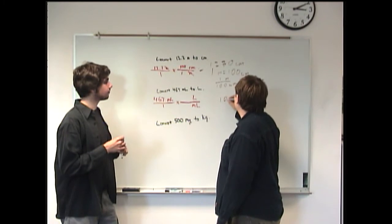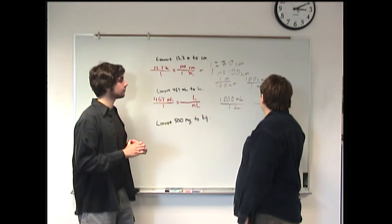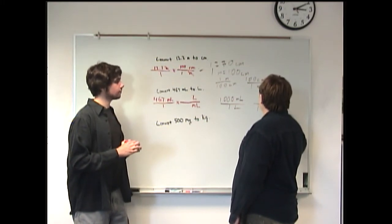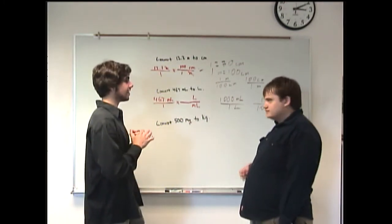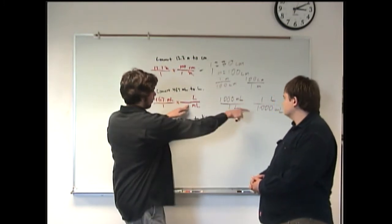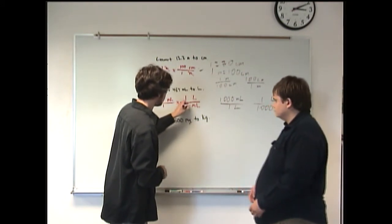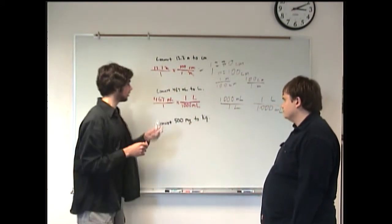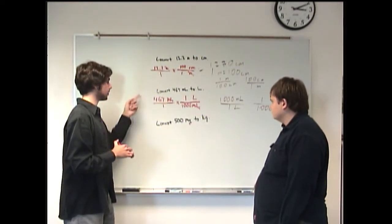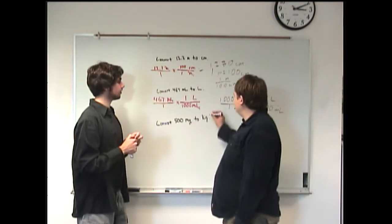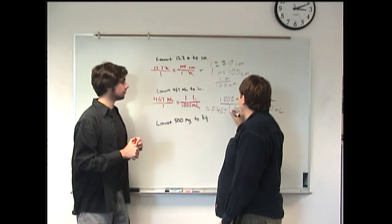We either have 1,000 milliliters over 1 liter, or 1 liter over 1,000 milliliters. Remember, you're going to want to memorize these. The one that matches here is 1 liter on top and 1,000 milliliters on the bottom. Our milliliters cancel, we're left with liters, and we do the division: 467 divided by 1,000 gives us 0.467 liters.